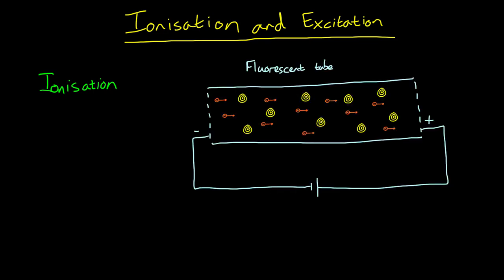Another way we can ionize something is by passing an electric current through a gas in a fluorescent tube. In this diagram the atoms are these yellow dots with energy levels or shells around them, and the conduction electrons flowing in the circuit are these orange electrons flowing from negative to positive.